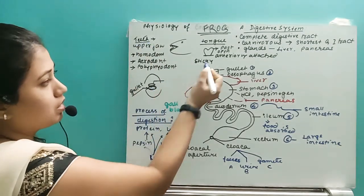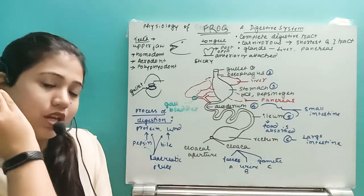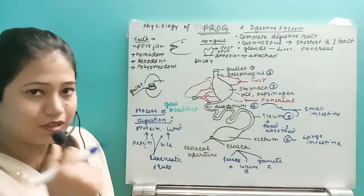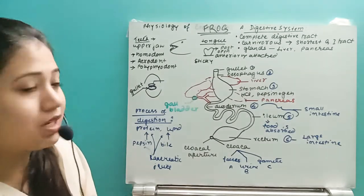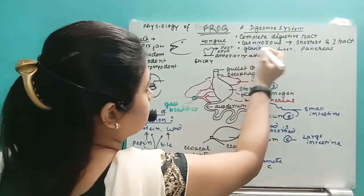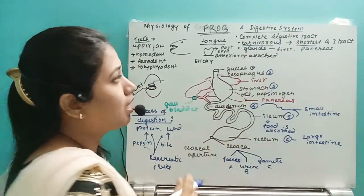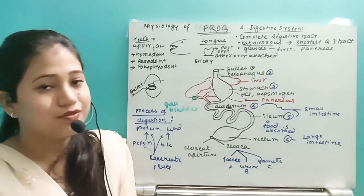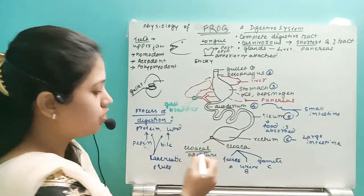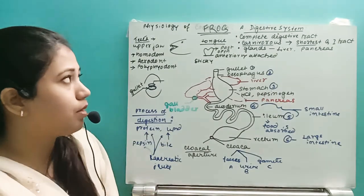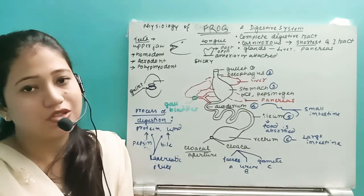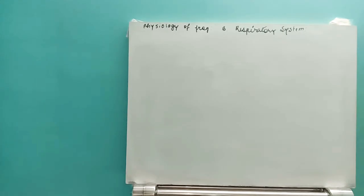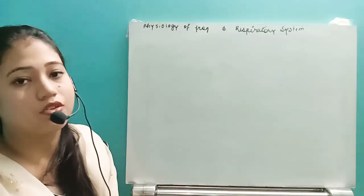To summarize the digestive system: the teeth are homodont, acrodont, and polyphyodont; the tongue is anteriorly attached and posteriorly open; the digestive tract is very short because this is a carnivorous animal; and the common opening for the digestive, excretory, and reproductive systems is called the cloaca.